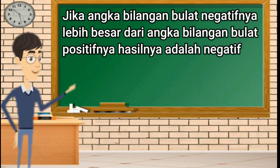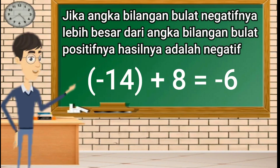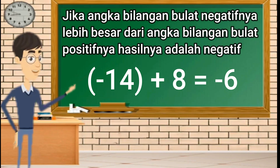Jika angka bilangan bulat negatifnya lebih besar dari angka bilangan bulat positifnya, hasilnya adalah negatif. Contoh: negatif 14 ditambah 8 sama dengan negatif 6, karena negatif 14 angkanya lebih besar daripada positif 8, maka hasilnya adalah negatif 6.